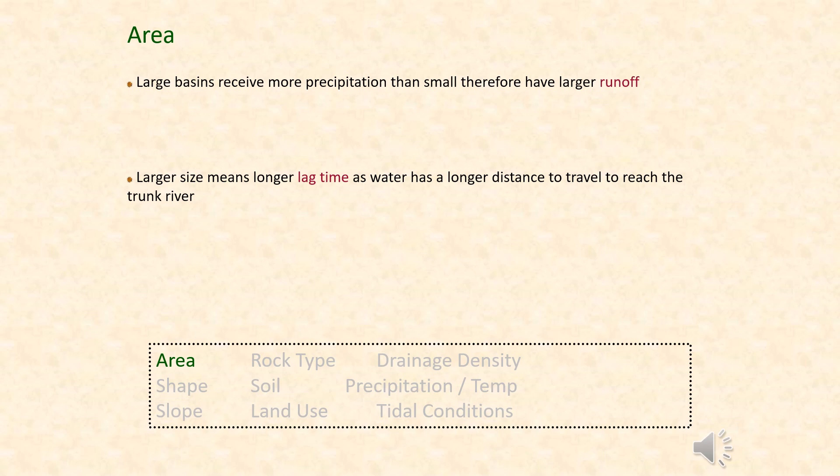There are two area factors that could affect a storm hydrograph. First, a large drainage basin receives more precipitation than a smaller one because it has a larger surface runoff, and therefore could potentially flood because of that extra precipitation. Conversely, a larger size could also mean a longer lag time, so it takes longer for water to travel to the river and is therefore less likely to flood.